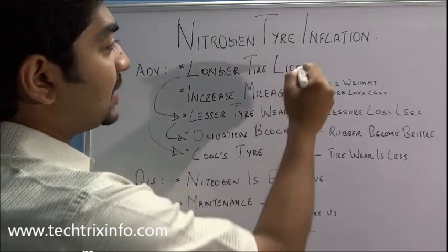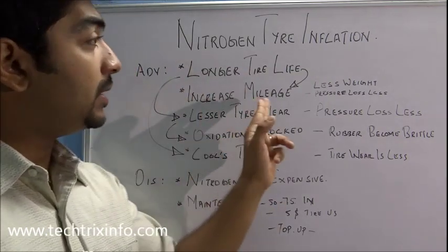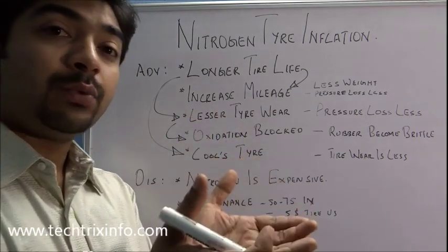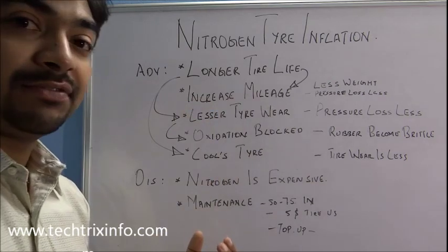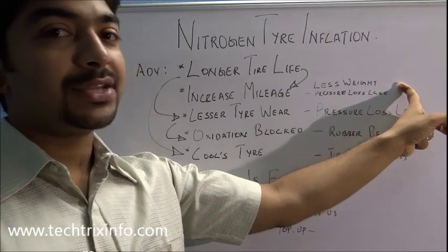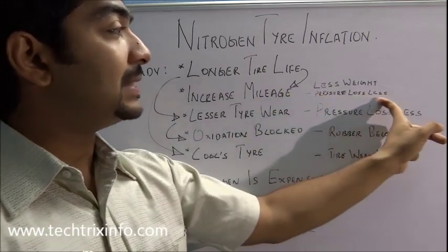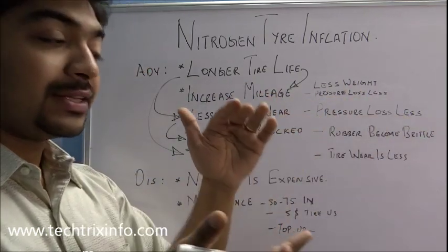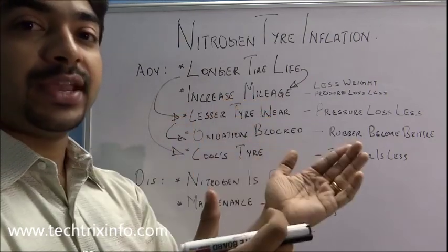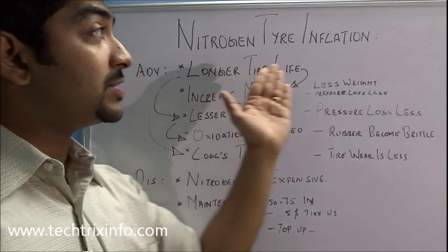The second major factor is an increase in mileage. In nitrogen-filled car tires, the mileage will be much more because nitrogen is of less weight, so the tire weight will be less compared to compressed air-filled tires. Less weight means less load on the engine, so mileage will definitely improve. Also, pressure loss is less in nitrogen-filled tires, maintaining optimum pressure for a longer period, which further reduces engine load and increases mileage.